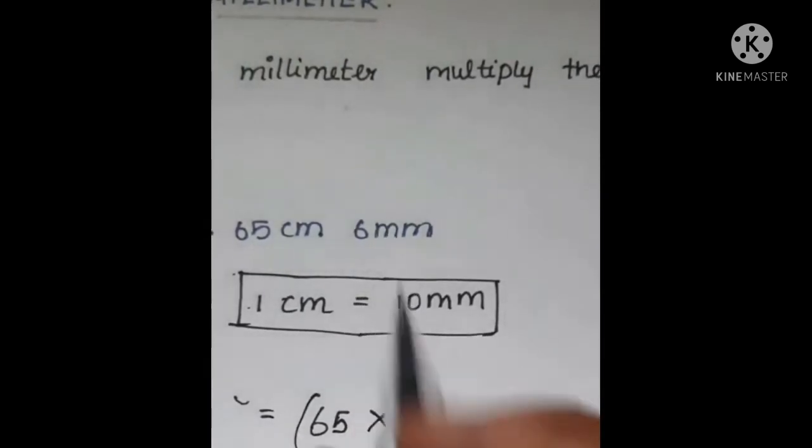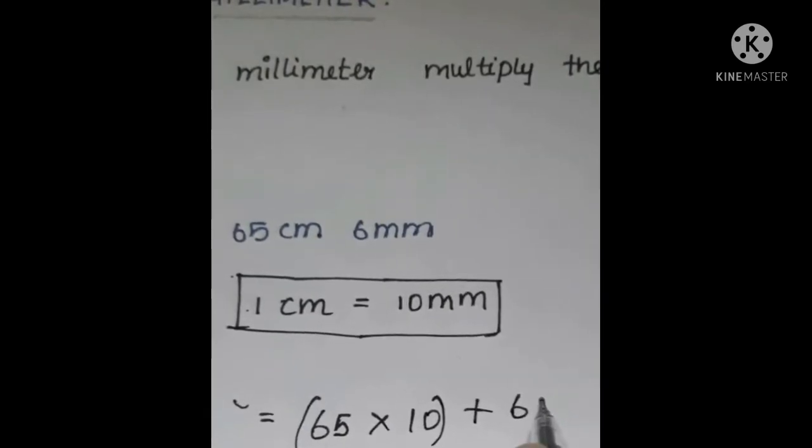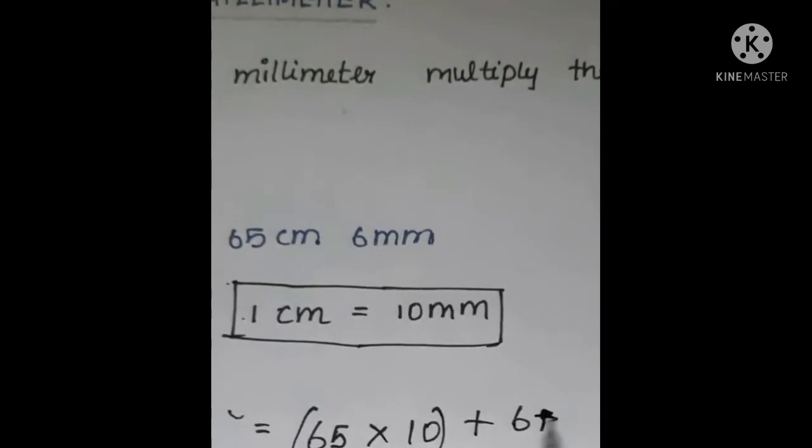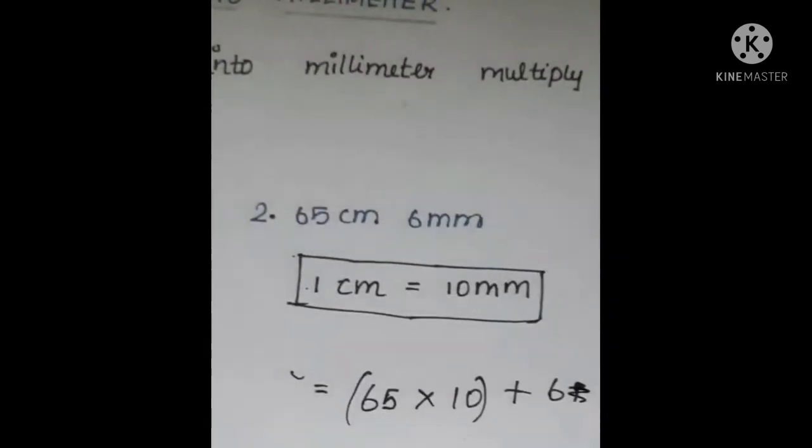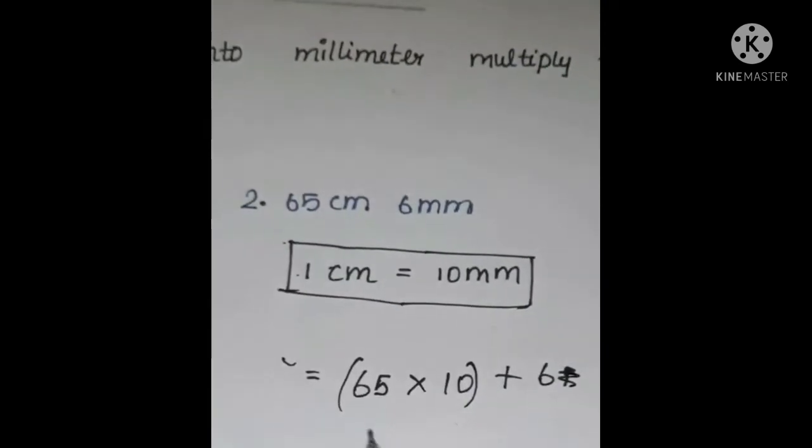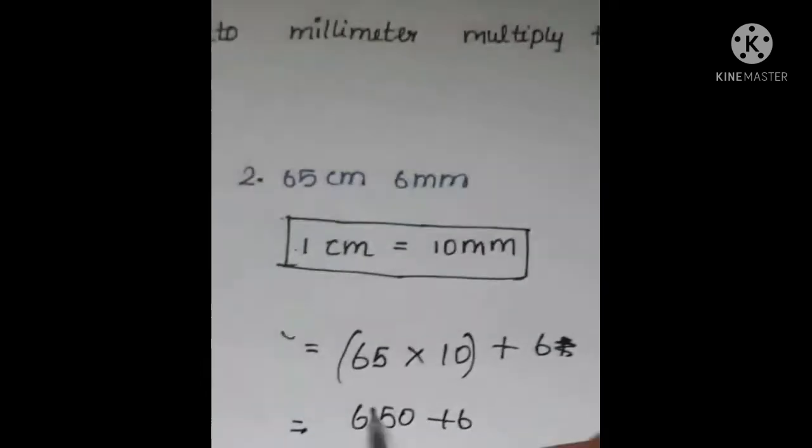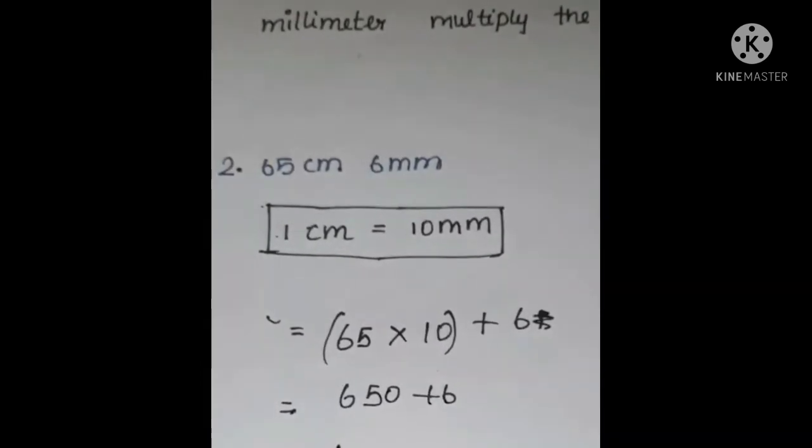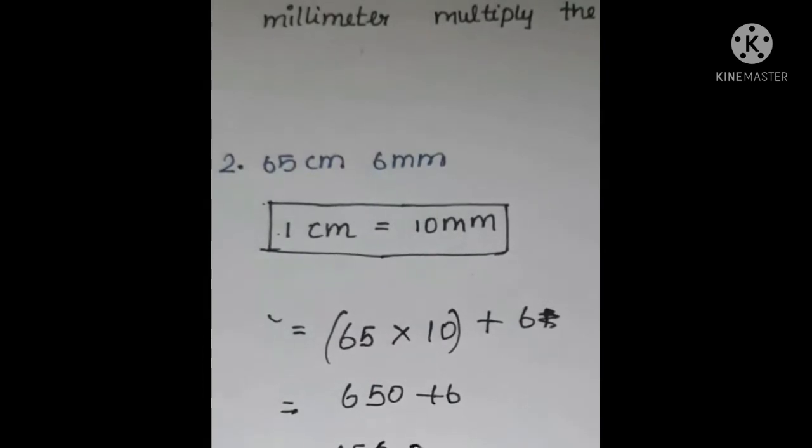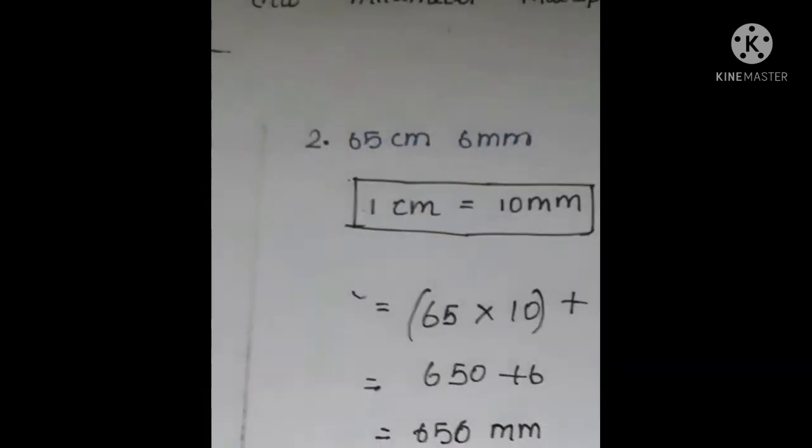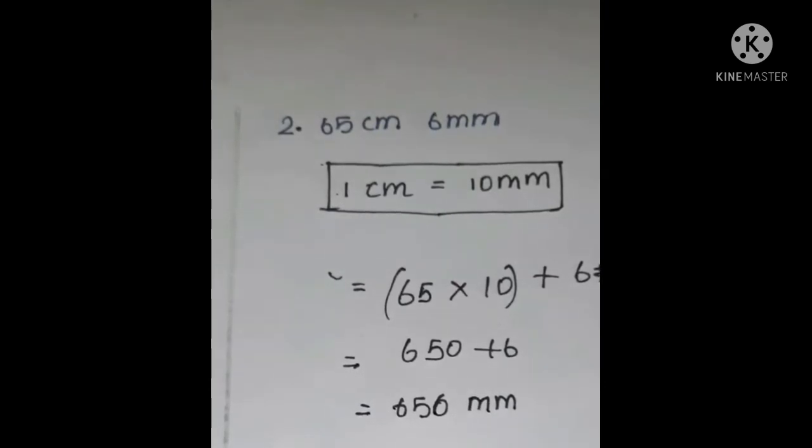After converting, we have millimeters, so we add. This equals 650 plus 6, which equals 656 millimeters. So the answer is 656 millimeters.